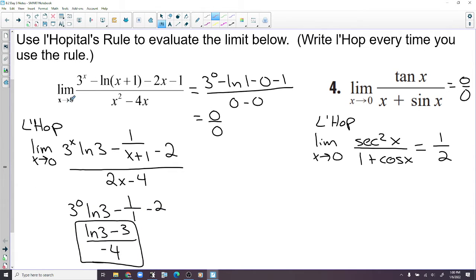We have the limit as x approaches 0 of all this stuff. 3 to the 0 is 1, natural log of 1 is 0, and then we have minus 0 minus 1 because we're plugging 0 into all this. And natural log, let's see, 3 to the 0 is 1 minus 1. That's how you get 0 over 0.